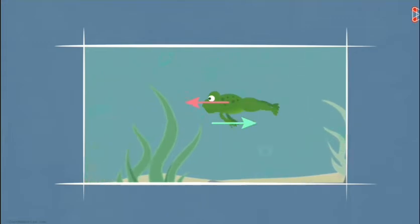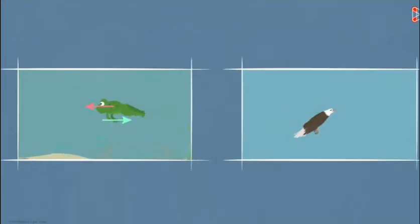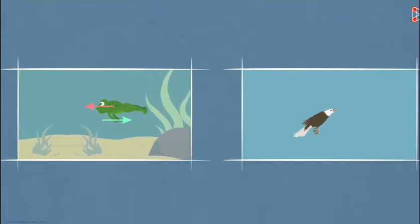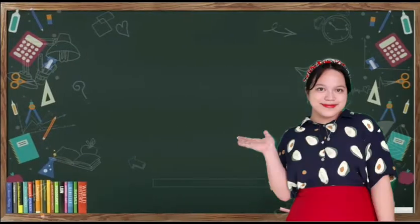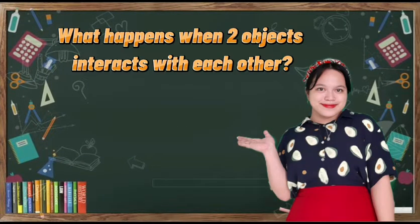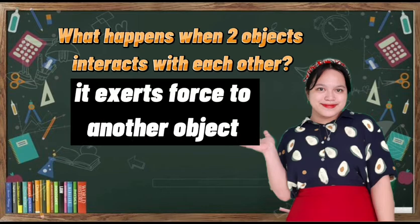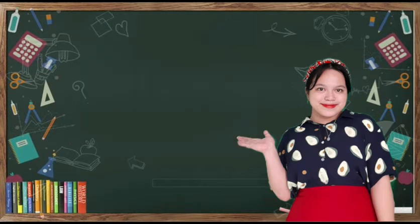Now let me ask you a question. A bird is flying upwards. Will Newton's third law apply here? Sometimes the third law is not so obvious. You'd probably say that the bird is the only object here and there's no second object, but that's not correct. The wings of the bird push the air downwards, and the air pushes the bird upwards. Action and reaction forces make it possible for birds to fly. Now who can tell me what happens when two objects interact with each other? They exert force on each other. Very good.